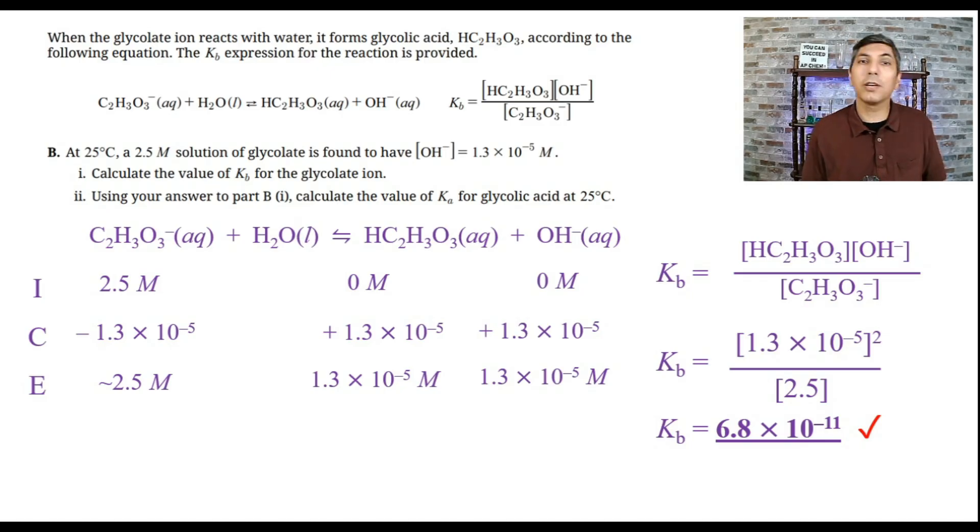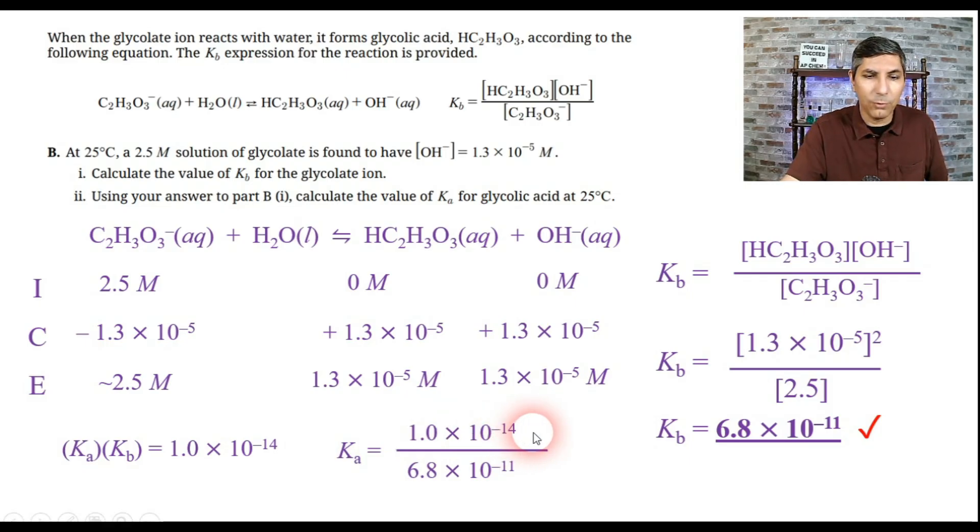Part B2 says using your answer to part B1, calculate the value of Ka for glycolic acid at 25 degrees Celsius. We know that Ka times KB equals Kw. At 25 degrees Celsius, Kw is 1 times 10 to the negative 14th. So I just plug it in, and I find that Ka equals 1.0 times 10 to the negative 14th divided by that KB value I just computed, 6.8 times 10 to the negative 11th. If my math is right, Ka is about 1.5 times 10 to the negative fourth. If you did that calculation and got the answer, give yourself a point for that as well.